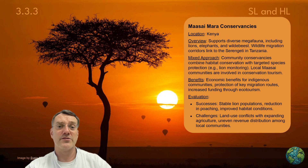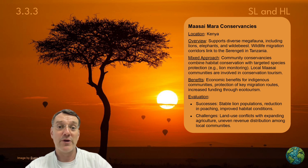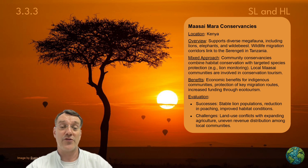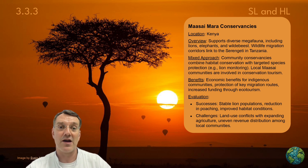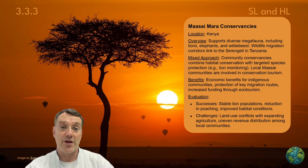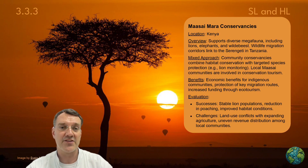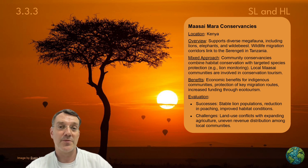The Maasai Mara Conservancies in Kenya support diverse megafauna including lions, elephants, and wildebeest, with wildlife migration corridors linked to the Serengeti in Tanzania. Community conservancies combine habitat conservation with targeted species protection such as lion monitoring, and local Maasai communities are involved in conservation tourism. This has led to stable lion populations, reductions in poaching, and improved habitat conditions, though challenges remain with land use conflicts and uneven revenue distribution.